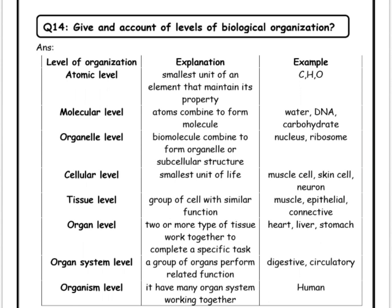The cellular level is the smallest unit of life. There are different cells in the body, such as muscle cells, skin cells, and neurons.